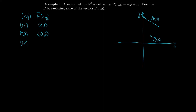For the point (3, 0), the vector becomes (0, 3). At (3, 0) the vector doesn't go left or right — it just goes up 3. We just keep going like this to build up the vector field.